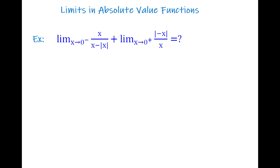If it had simply said x goes to 0, we would need to check both sides. But here it's specified. So just put 0 instead of x and proceed. Approaching from the left means x is negative, so |x| is negative inside; to make it positive, put a negative in front.